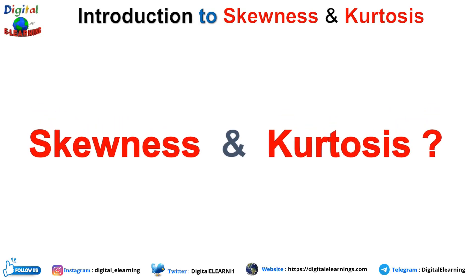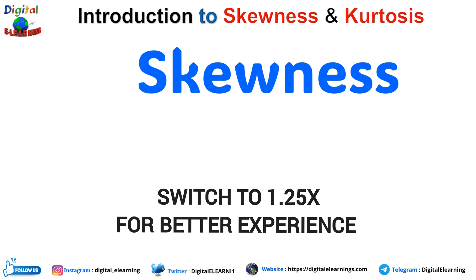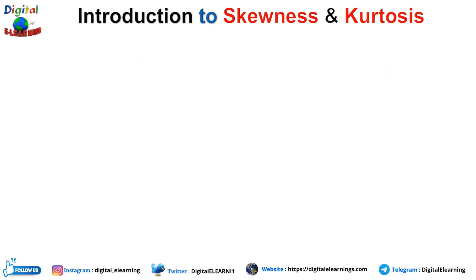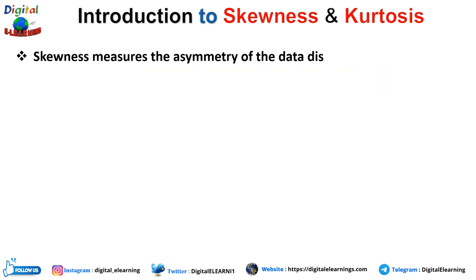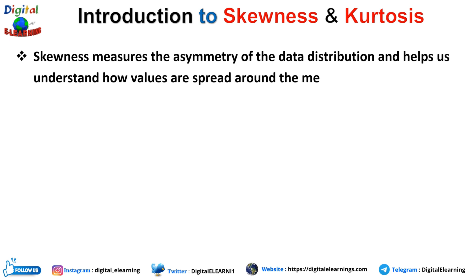So what is skewness and kurtosis? Let's first start with skewness. Skewness basically measures the asymmetry of data distribution and helps us understand how the values are spread around the mean. In simple terms, it tells us if the data is skewed to the left, right, or is symmetrical. Literally, skewness measures the lack of symmetry.